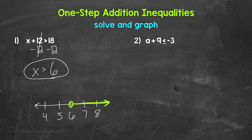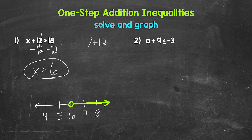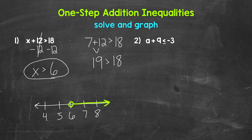We need to represent the greater than 6 part, so we draw an arrow pointing to the right — the direction of all values greater than 6. That's our graph. Any value greater than 6 is a solution of this inequality. We can also check a solution: let's use 7. Plug in 7 for x: 7 plus 12 is greater than 18. 7 plus 12 gives us 19, and 19 is greater than 18 — so this works. We are correct. Our answer for number 1: x is greater than 6.